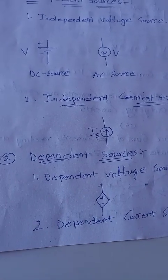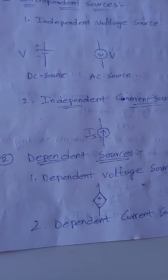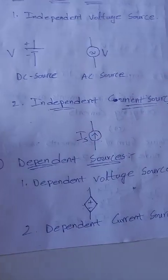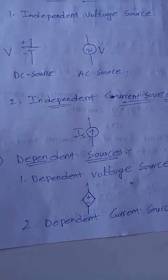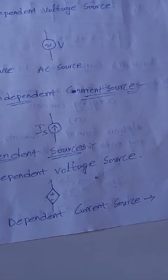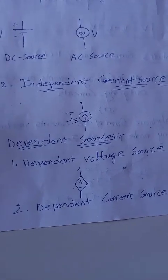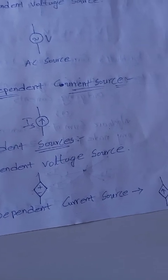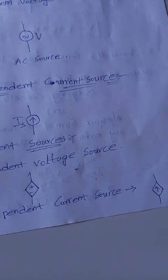Independent source is two types, and dependent sources are also two types: dependent voltage source and dependent current source.